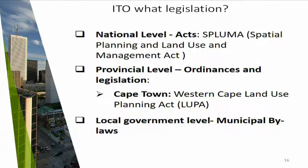On the provincial level, SPLUMA determined that each province must have their own piece of legislation with the same principles as SPLUMA, guiding that specific province. For instance, in the Western Cape we have the Western Cape Land Use and Planning Act, or LUPA. From provincial level, it goes to local government level, where each and every municipality must create a bylaw. So the bylaw is where you start if you want to rezone or establish a township — that's where you see how you can get new rights to use your property.